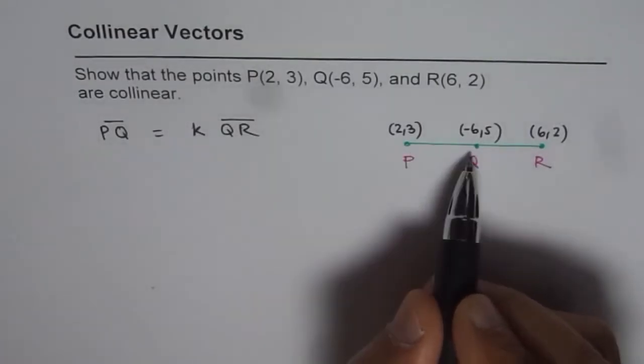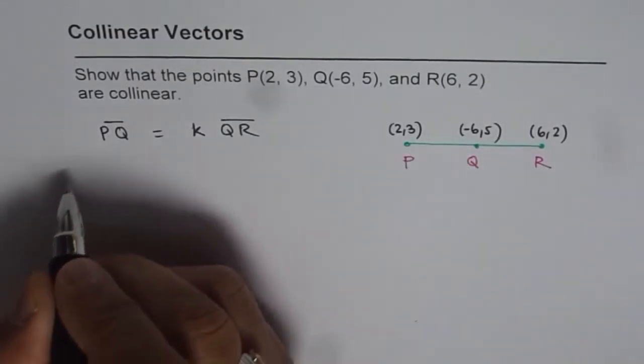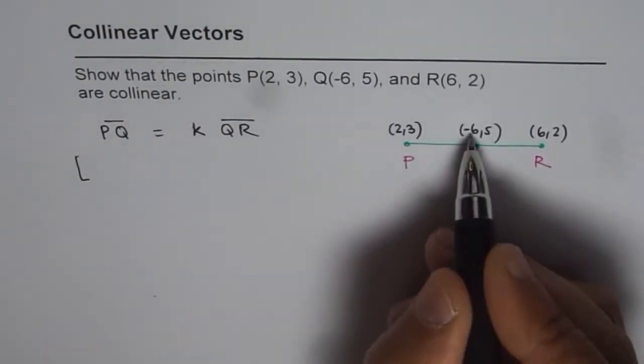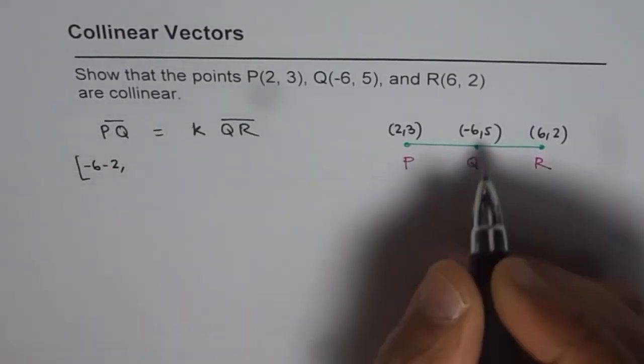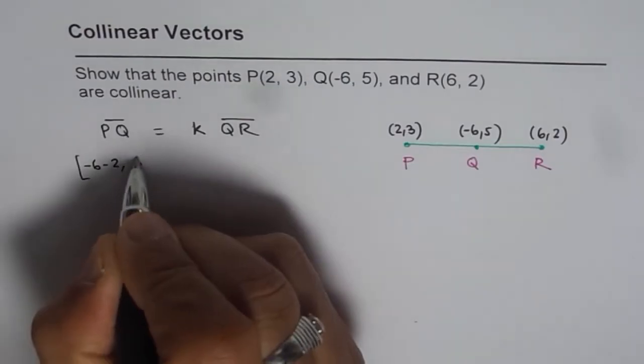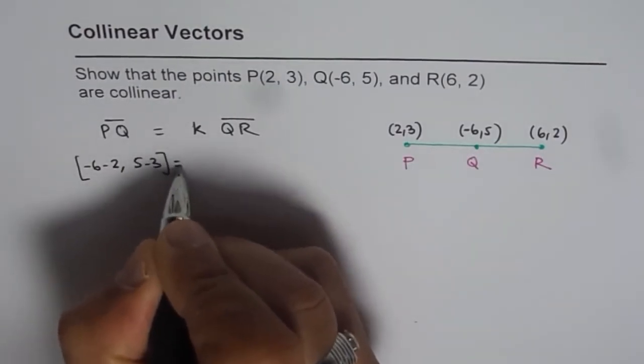So from here, what is PQ? PQ will be equals to minus 6 minus 2, 5 minus 3. That is the vector PQ.